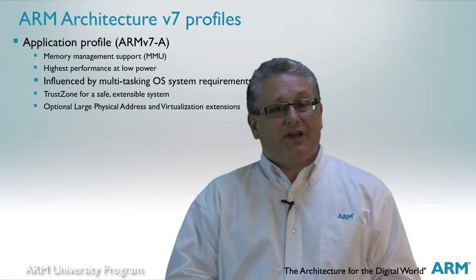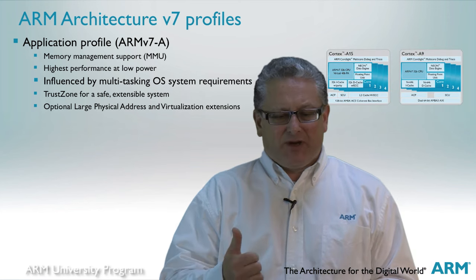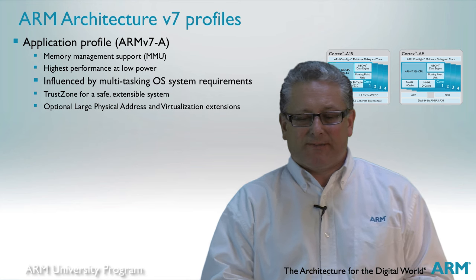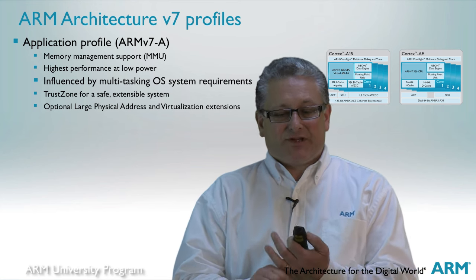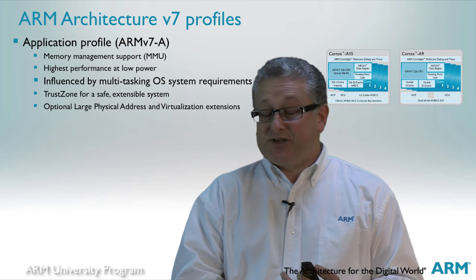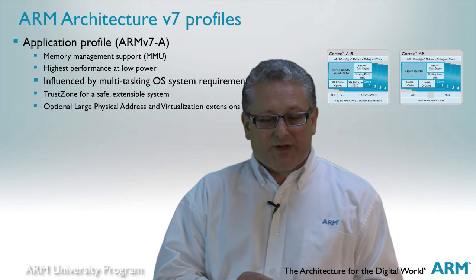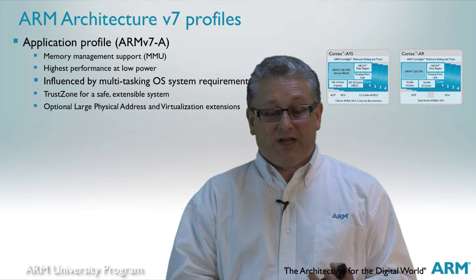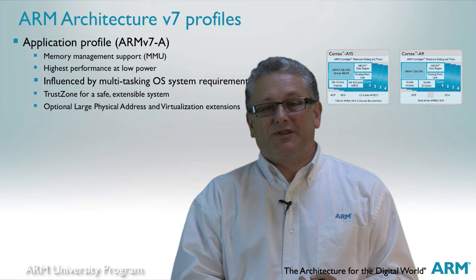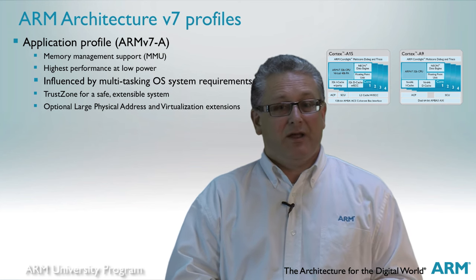ARMv7A is the highest capability and highest performance profile. Devices supporting ARMv7A incorporate memory management units that allow implementation of a full virtual memory system, as required by operating systems such as Linux. They also support TrustZone security extensions for secure platforms like payment and digital rights management. Later ARMv7A devices also support 40-bit physical addressing and hardware virtualization, though these are currently only supported by the Cortex-A15 and Cortex-A7. Cortex-A devices are typically found in the highest performance applications such as smartphones, tablets, netbooks and digital televisions.